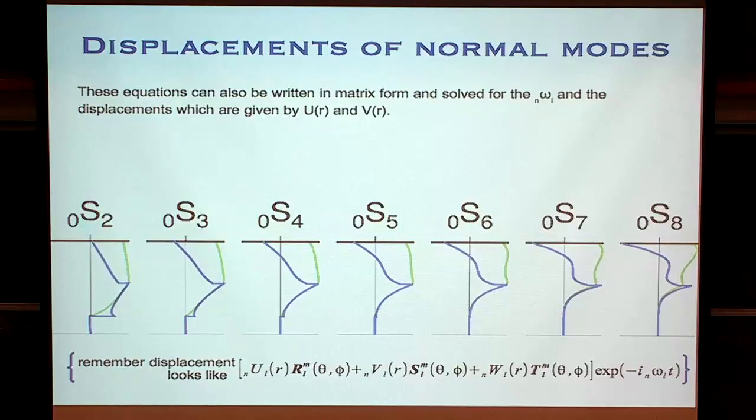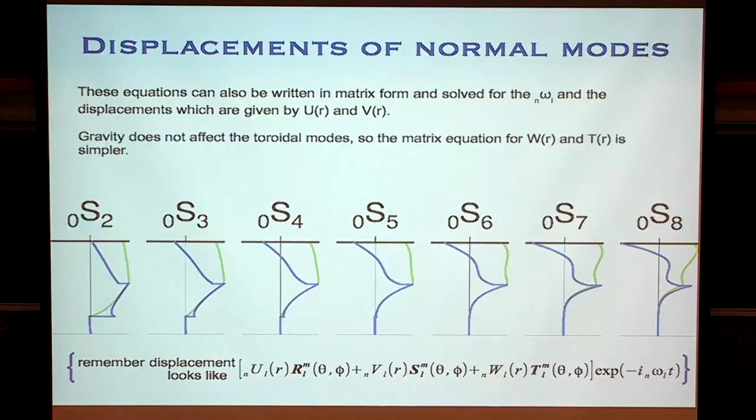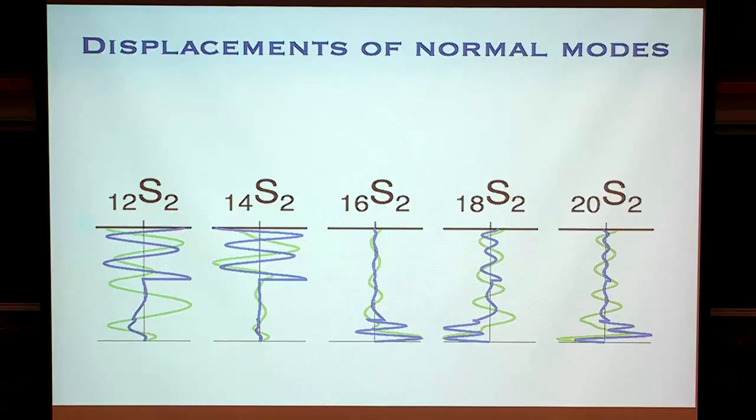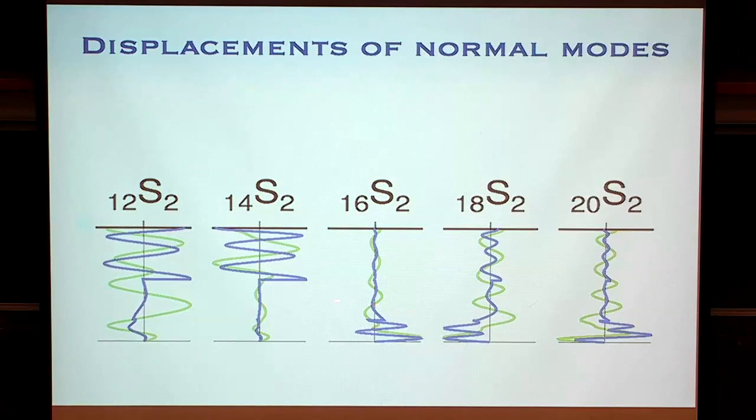If we pick different N values with L always equal to 2, we see that the displacements do quite varied things. Mode 12S2 has pretty much motion everywhere. Mode 16S2 has a lot of displacement concentrated in the inner core and not much happening at the surface.